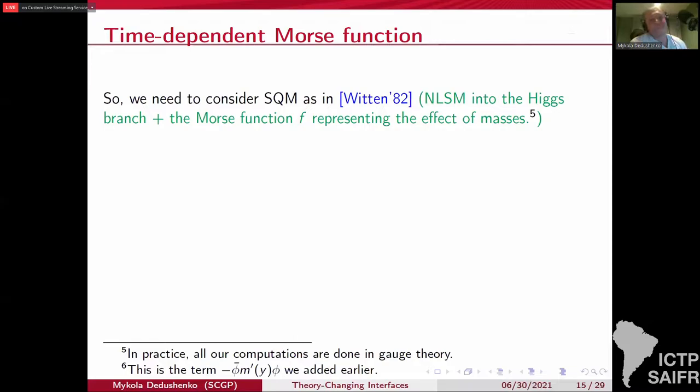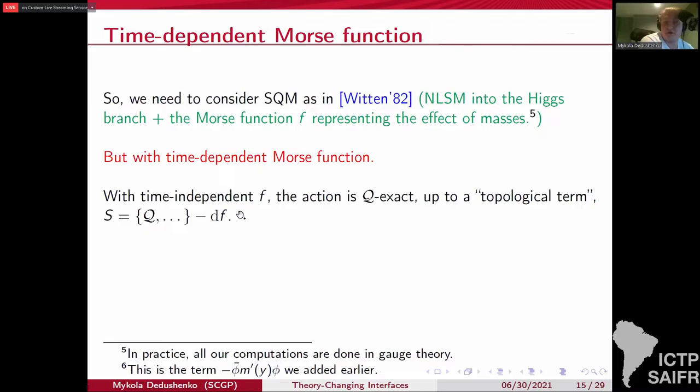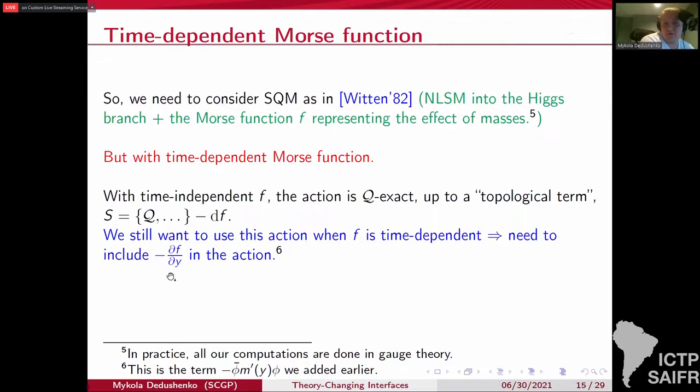Let me just consider the supersymmetric quantum mechanics, as in Witten's paper, with a target space the Higgs branch of our theory and Morse function f representing the effect of masses. And the Morse function now depends on time explicitly. When the Morse function is time independent, we usually write the action as a Q-exact term plus the topological term like this. We would like to use the same action in the case when f is time dependent. So you just have to make sure that this additional term is included so that you can assemble this total derivative term. And this additional term that we include is precisely what we had before to make the Janus interface supersymmetric.